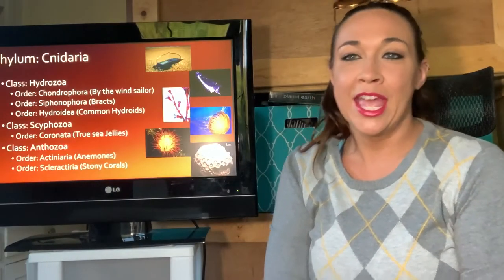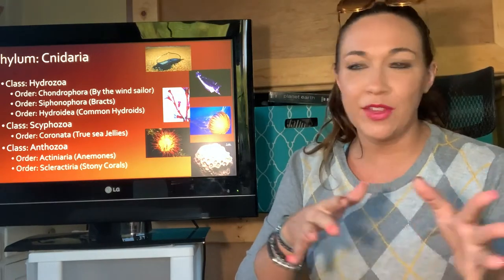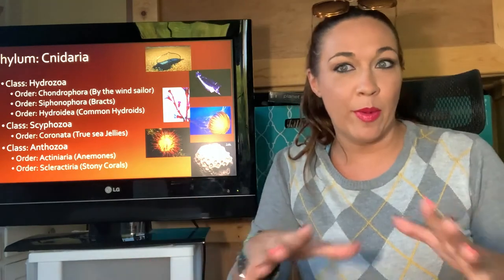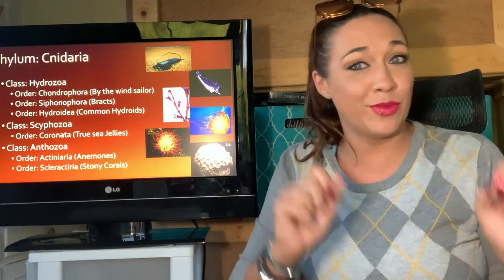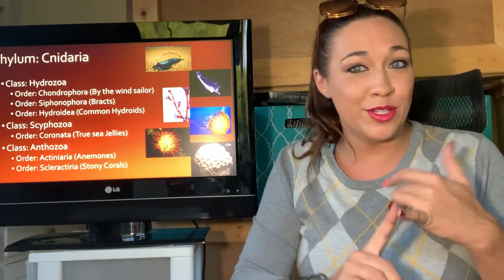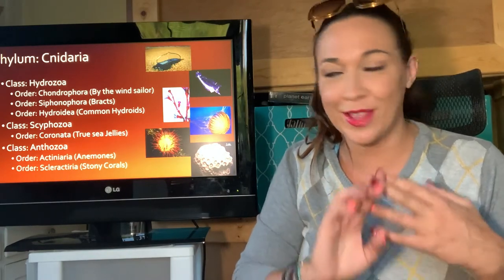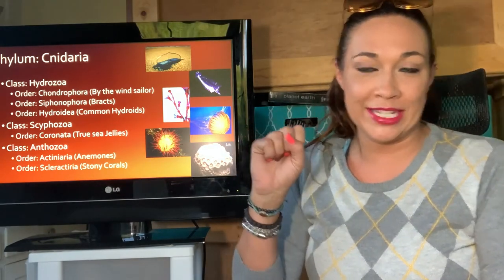The phylum Cnidaria has some amazing organisms in it. I want to remind you that taxonomy is really important. We're in the domain Eukarya, the kingdom Animalia, and this is the phylum Cnidaria. There are three classes we're going to be focusing on: the first is Hydrozoa, or the hydroids, and that class has three orders inside of it.